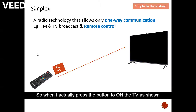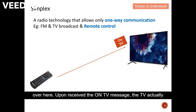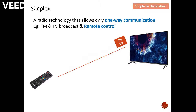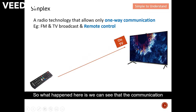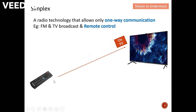In the animation, when I press the button to turn on the TV, the TV turns on upon receiving the message. You can see that communication takes place from the remote all the way to the TV, and the TV has no means to communicate back to the remote control. This is why it is classified as simplex.